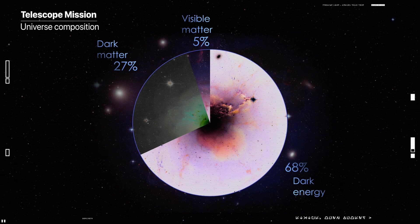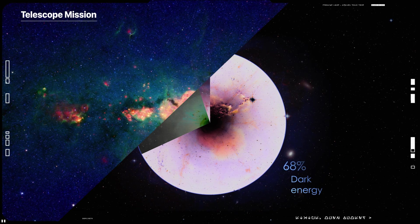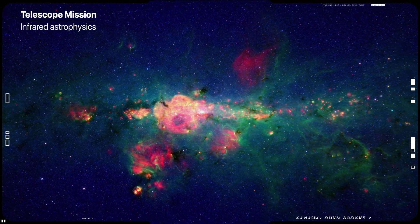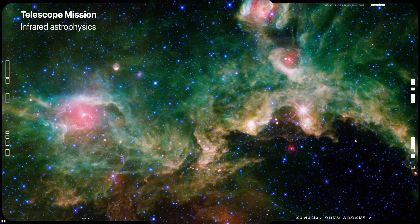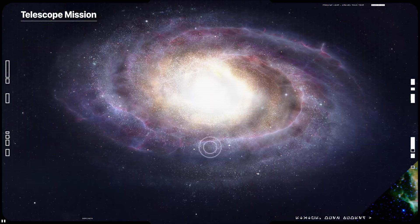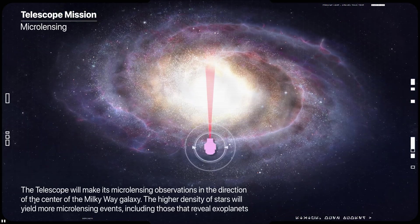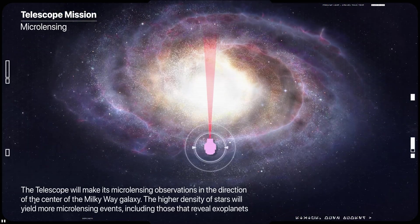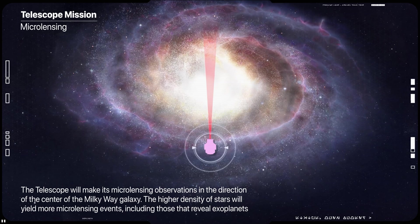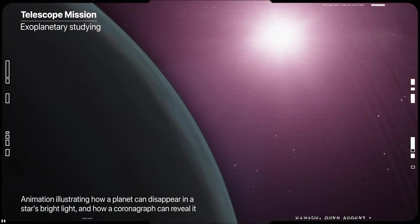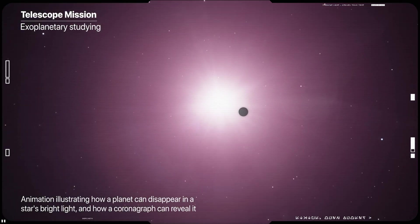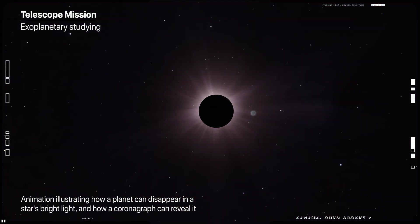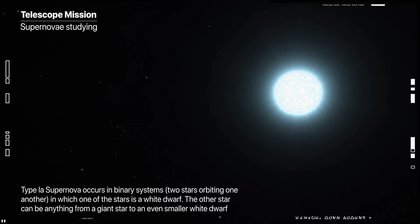Its surveys include a large area, high-latitude imaging and spectroscopic survey that enables high-precision cosmological measurements with weak lensing and galaxy clustering, a time-domain survey that enables discovery and light-curve monitoring of thousands of Type Ia supernovae, and a time-domain survey of the galactic bulge that enables discovery of thousands of exoplanets at one astronomical unit and larger separations via gravitational microlensing.